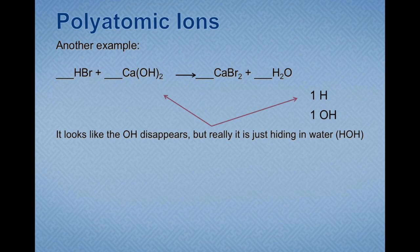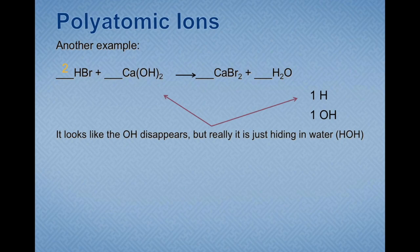I'm going to go ahead and balance this, leaving the polyatomic ion for last since it's a little more confusing. We'll start with bromine. If we look on the product side, it's calcium bromide with BR2 — there's two of them. So on the reactant side we're going to need two HBR. I'll write down that one so I know I've already accounted for this compound in this first round of balancing. It may stay one or it might change, but we'll leave it there for now.